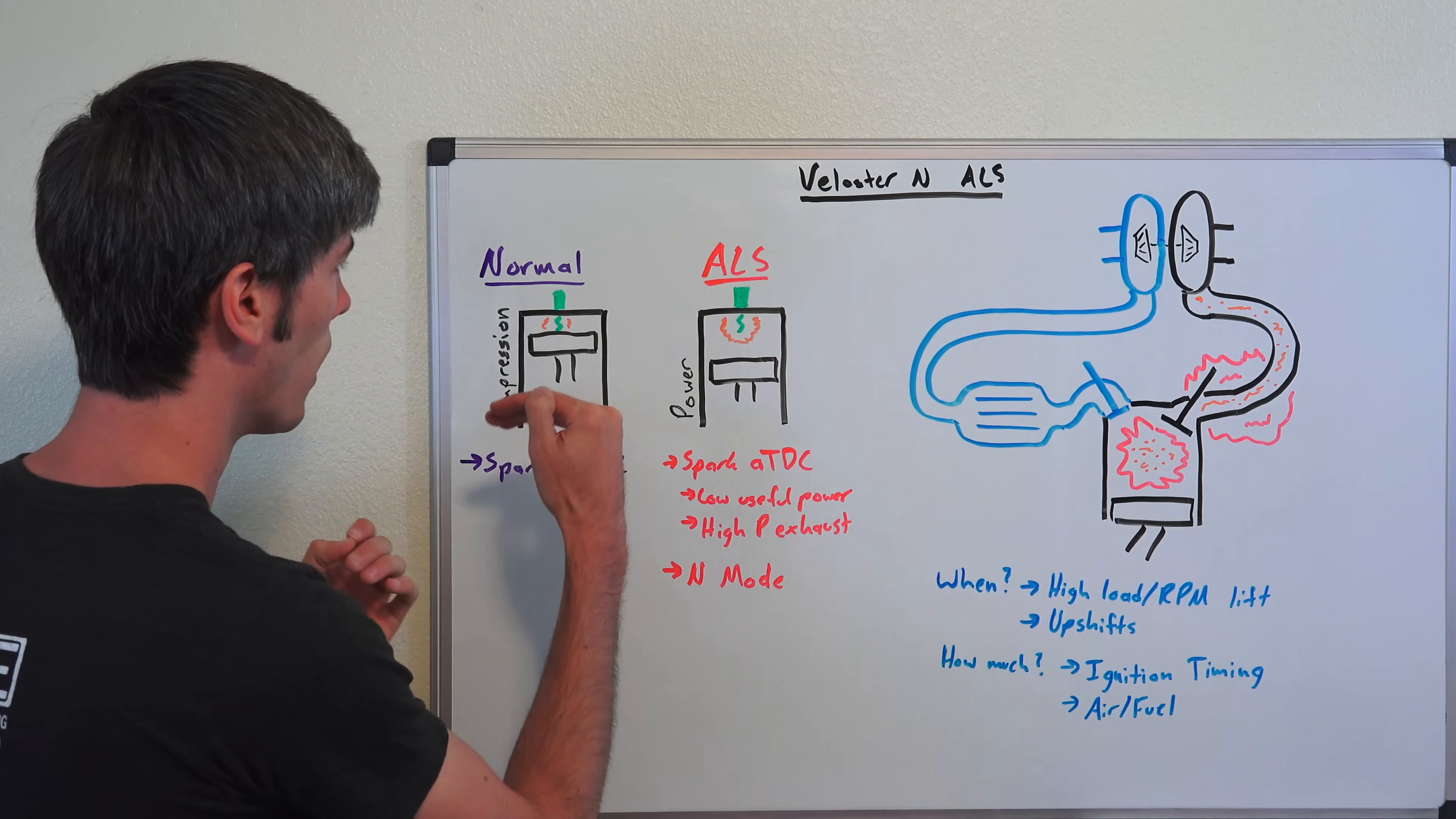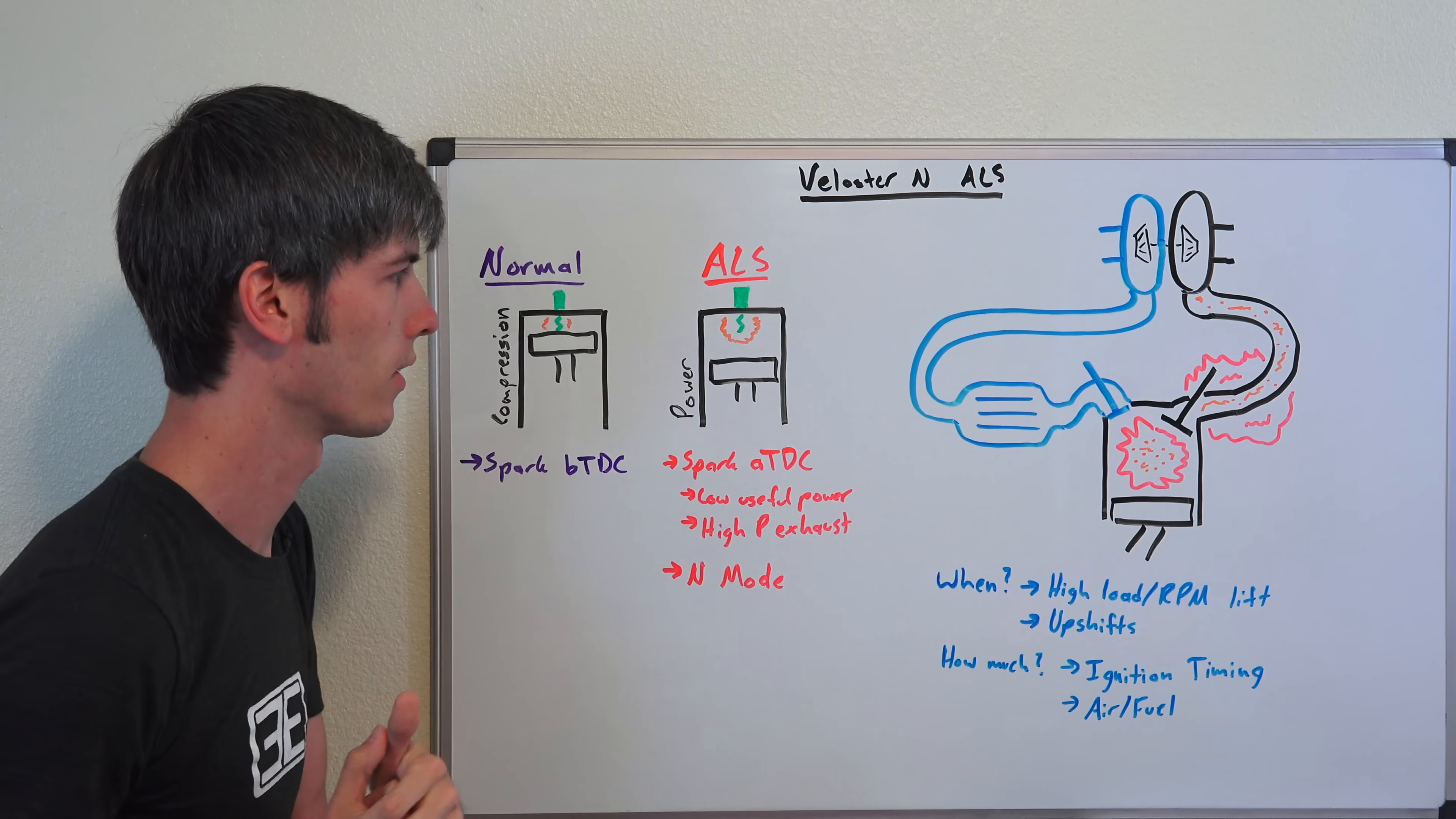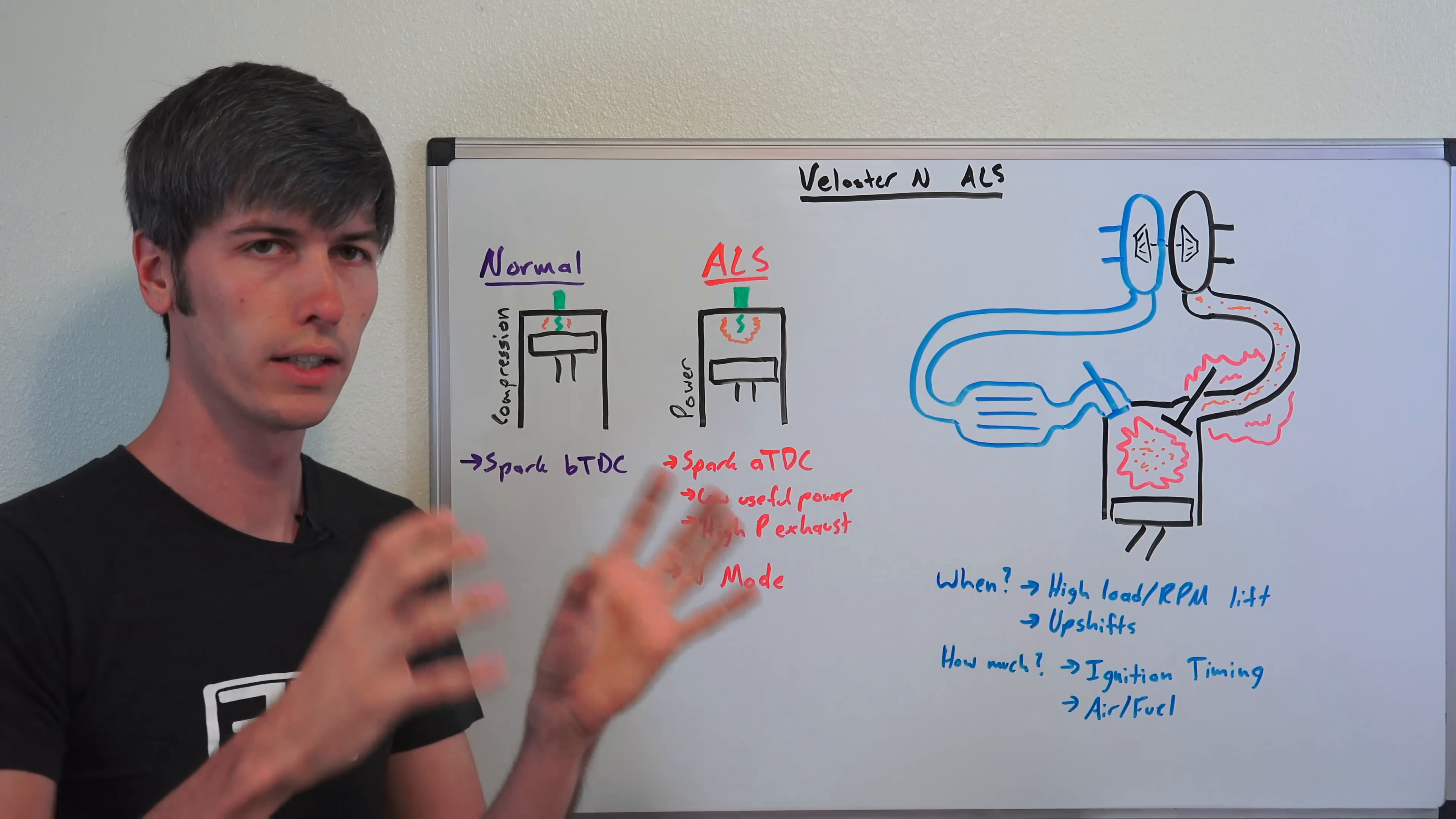In a normal engine cycle during the compression stroke before that piston reaches top dead center, you're going to have that spark ignite. It's going to start to build that combustion, that flame front travel out and then push the piston down. Now when you're using an anti-lag system, you let off the throttle and you retard the ignition.